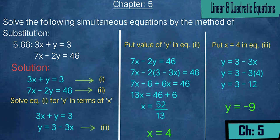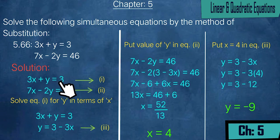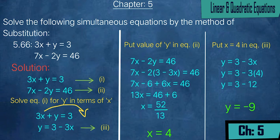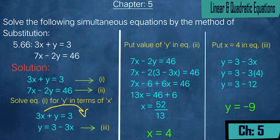In the elimination method we did multiplication and subtraction to eliminate x and y values. But here we will do it a little differently — we will solve equation 1 for y in terms of x. Equation 1 was 3x + y = 3. We separate y and shift 3x to the other side, so y = 3 - 3x. This is not y's final value because it still has x; we have just expressed y in terms of x.